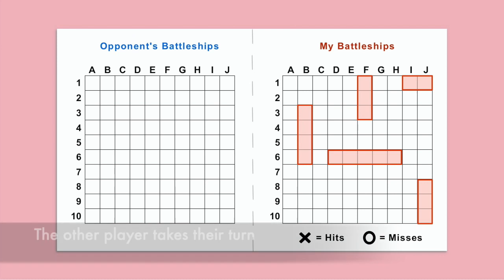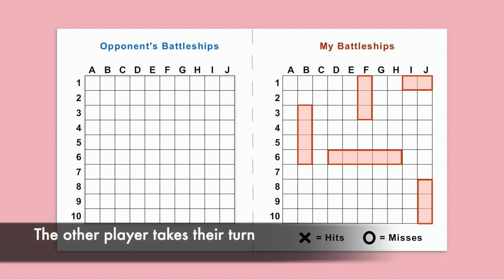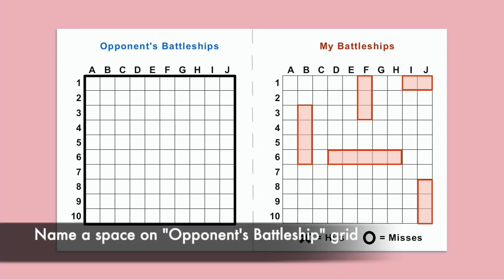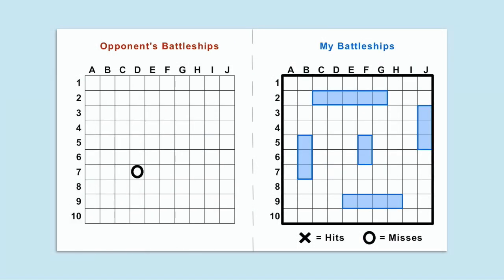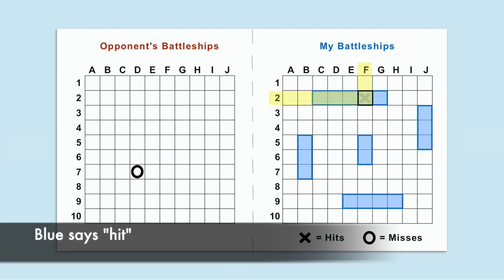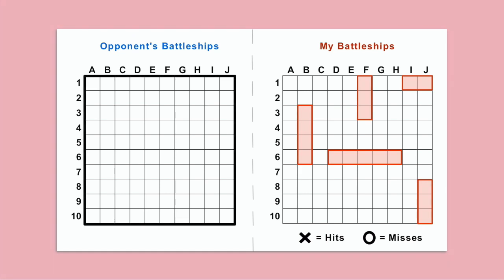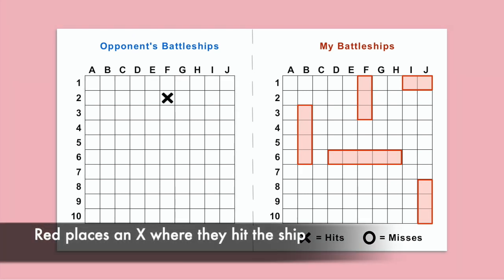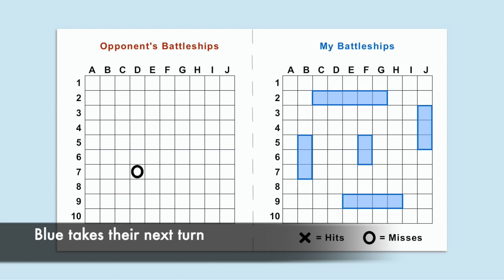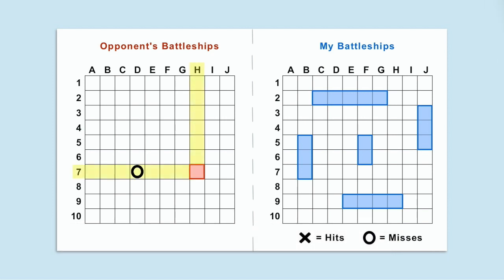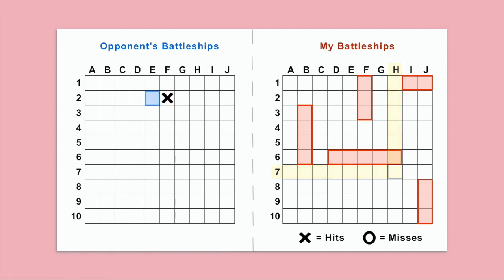After the start player names a square to fire at, the other player will take their turn. They will look at the opponent's battleship section on their sheet and choose a space on the grid. Let's say red picks to fire at F2. Blue will look at their My Battleships section to see if red hit a part of their ship. F2 hits part of their ship, so they will say hit and place an X on the square. Red will mark an X on F2 on their opponent's battleship grid. The game continues with both players taking turns firing at specific squares and indicating hits or misses.